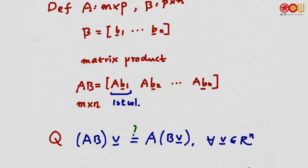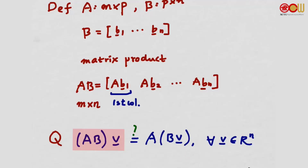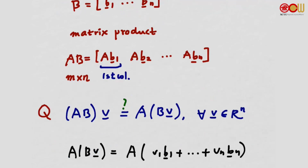A question: we have a matrix product AB, and on the left-hand side we have a matrix-vector product (AB)v. On the right-hand side, we have BV, which is a matrix-vector product giving a vector, and then we multiply A with this vector — another matrix-vector product A(Bv). Would these two be the same for all V in R^N? Let's use the definition of matrix-vector product on the right-hand side and see if it matches the left-hand side.